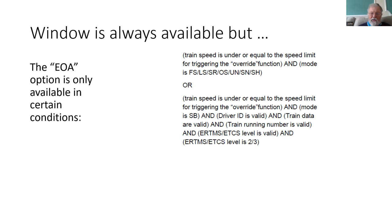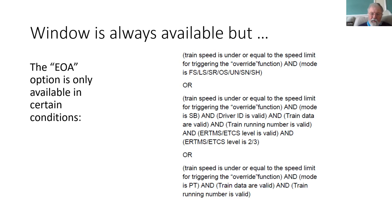Alternatively, if you're in standby, the condition is a little bit more complicated: you have to be again below that speed, but you also need to have the train data valid, and you need to be in level two or three. This makes it equivalent to having been, or being able to get, a movement authority in order to override the EOA. The fact that you're in standby means the front of the train is virtually the limit of where you can move. And lastly, if you're in post-trip, there are some conditions around speed for selecting override, which would normally be standstill.